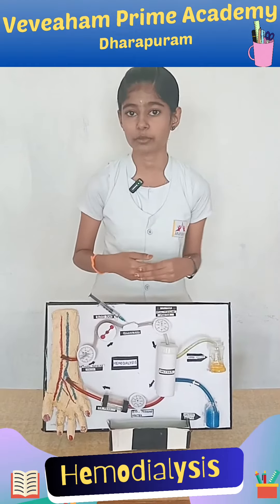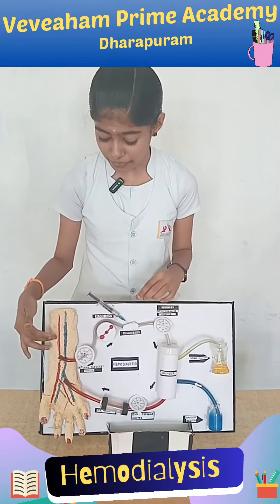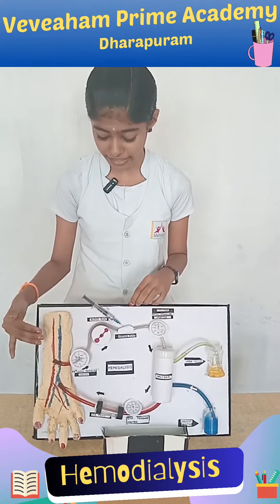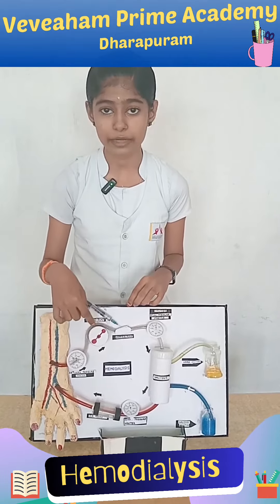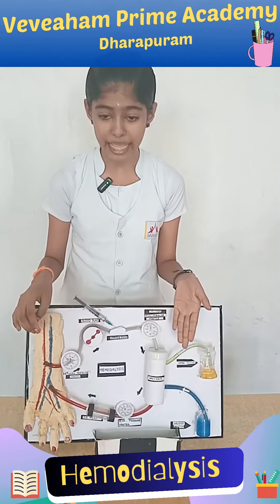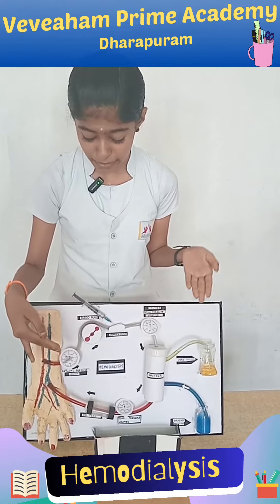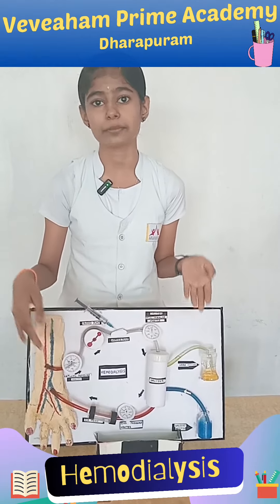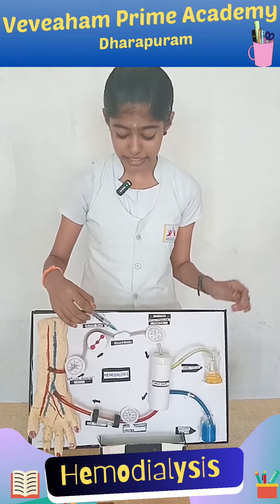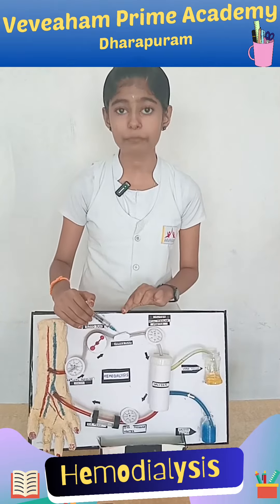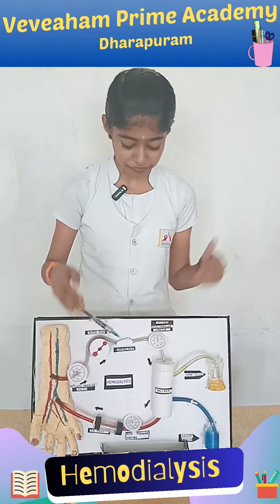The blood from the arteries of the patient is taken and it is sent to the blood pump, which pumps the blood to the dialyzer. There is an arterial pressure monitor which monitors the pressure of the artery, and here there is a heparin pump which prevents the blood from coagulation.